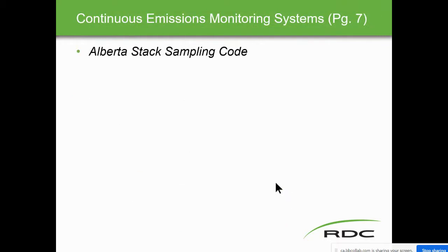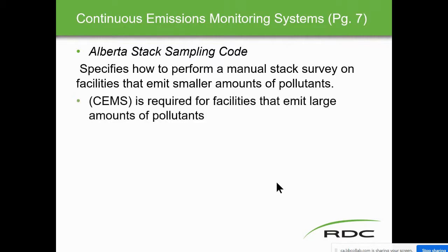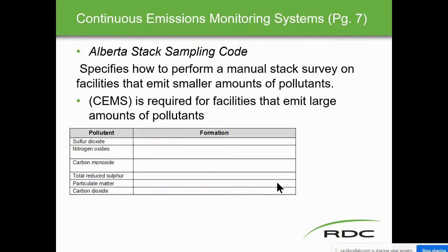Alberta stack sampling code specifies how to perform a manual stack survey on facilities that emit smaller amounts of pollutants. The CMS — Continuing Emission Monitoring System — is required for facilities that emit large amounts of pollutant. The pollutants on page 7 include: sulfur dioxide, nitrogen oxides, carbon monoxide, total reduced sulfur, particulate matter, and carbon dioxide.